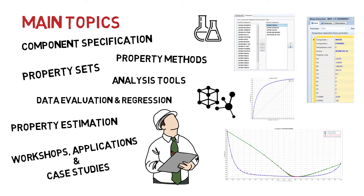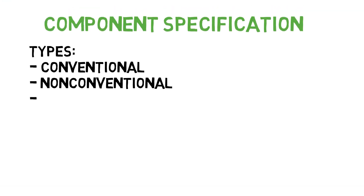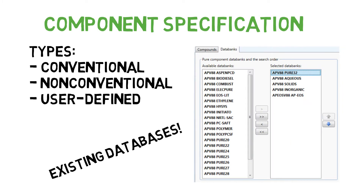In the component specification, we learn about the different types of components, such as conventional, non-conventional, and user-defined components, as well as the existing databases in Aspen Plus.